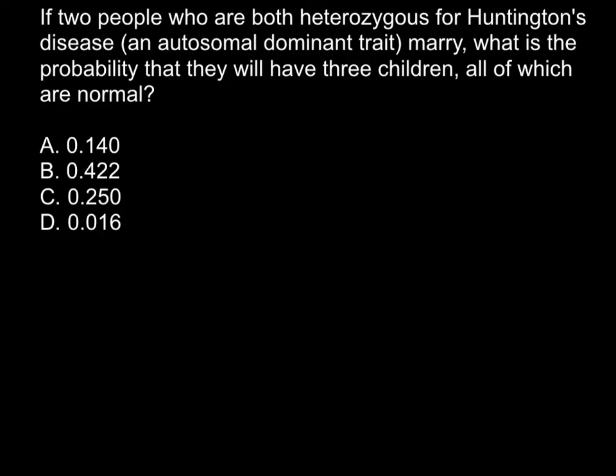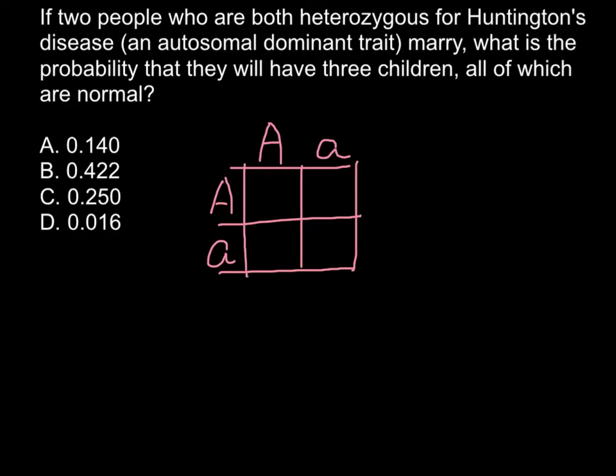So as you see, we have two people who are both heterozygous. So let's use, for example, capital A for the dominant allele and small a for the recessive allele. And now we can build a Punnett square and we can find the frequencies and genotypes of the progeny. And as you see, here we are going to get capital A capital A, capital A small a here, capital A small a here, and small a small a here.